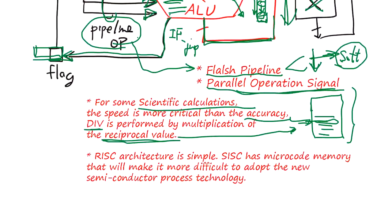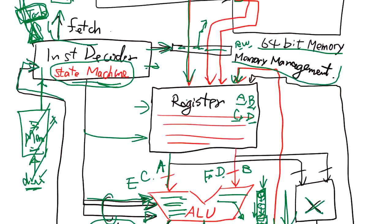And RISC architecture, as I said, it's simpler to adapt the new semiconductor process technology. So you have to deal with memory plus gate, both of them to speed up everything. So it gets more complicated.